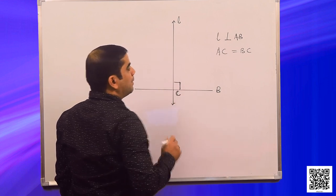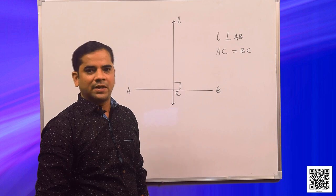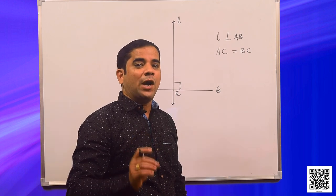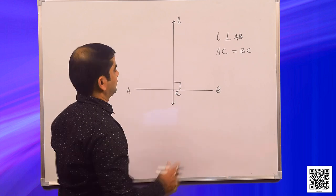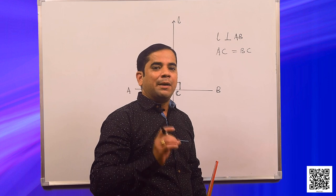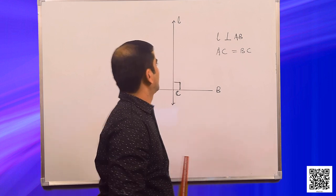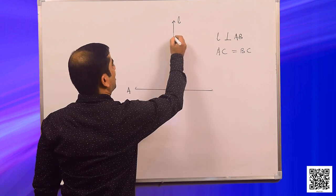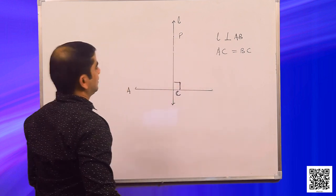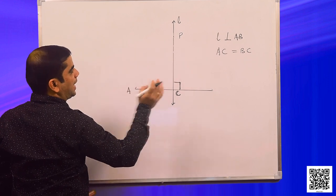This is your point C. As per the given data, AC is equal to BC, because L is the perpendicular bisector to AB, so C is the midpoint of AB. That is why AC is equal to BC. Another data given is: if a point P lies on L, let us assume a point P on line L.